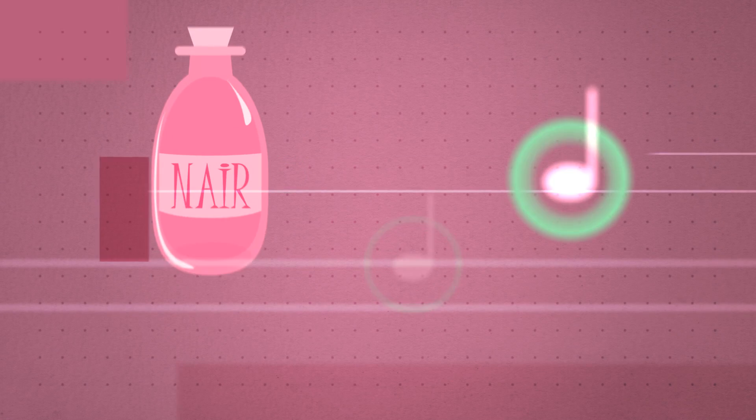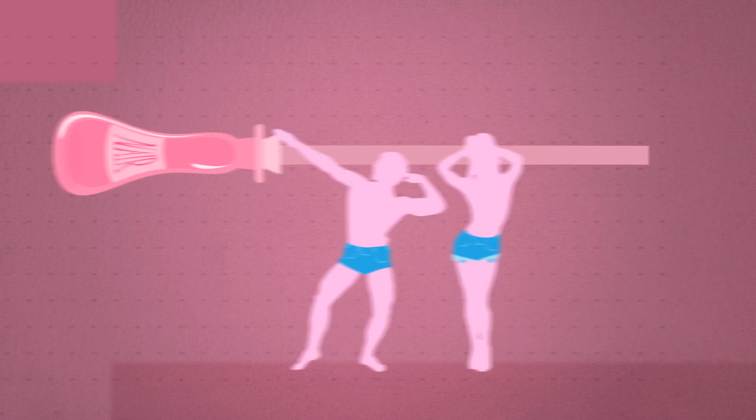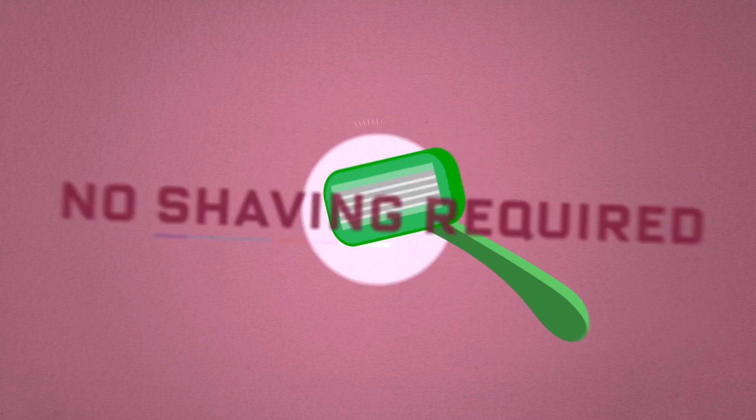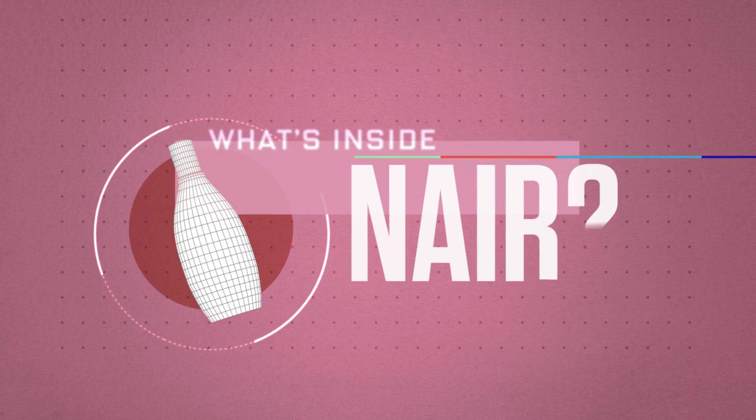You know the jingle. Nair is for short shorts. Spread this lotion on your legs and hair disappears with a wipe. No shaving required. So what's inside this stubble-busting stuff?